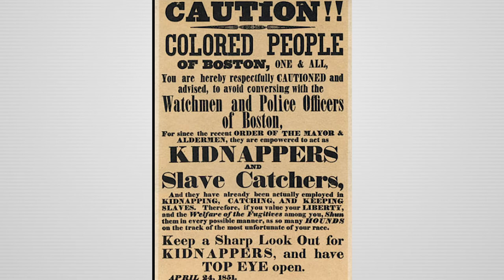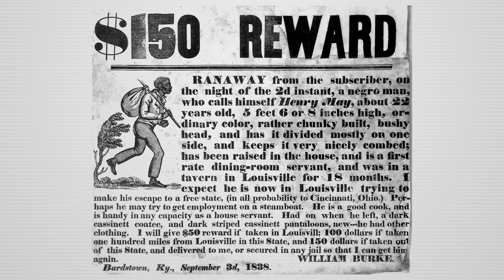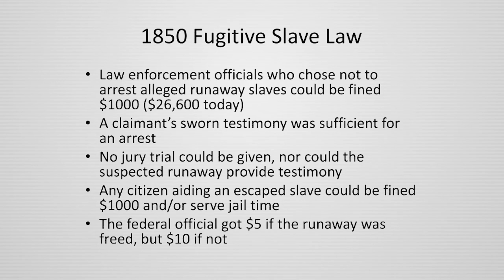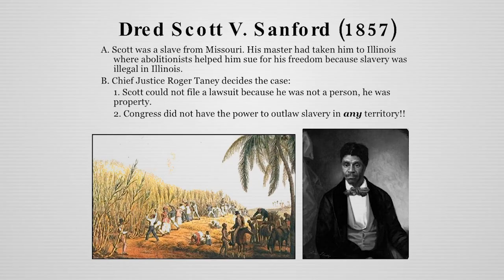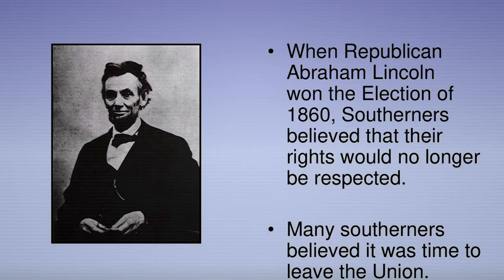In 1850, Congress passes another Fugitive Slave Act, which mandates government participation in the capture of escaped slaves. Boston citizens, including some of the wealthiest, storm a federal courthouse in an attempt to free escaped Virginia slave Anthony Burns. In 1857, the Supreme Court rules Congress does not have the right to ban slavery in the states, and slaves are not citizens.